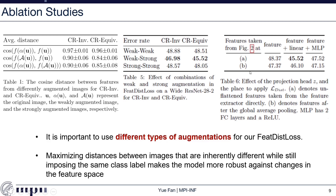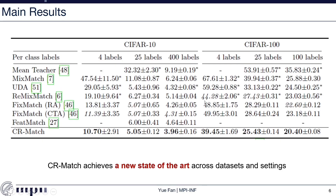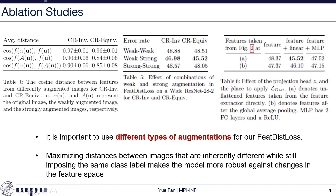In Table 6, we study the effect of the projection head and the place to apply feature distance loss, where AB denotes where we take the features: A means directly from the encoder, and B means after the global average pooling layer. We tested three types of projection heads: no head (feature directly fed into the loss), our default linear layer, and a three-layer MLP. From the table, removing the linear layer or replacing it with a three-layer MLP decreases performance to 48.3% and 47.5% respectively. The same conclusion holds when the feature is taken from the global average pooling layer, justifying our CRMatch design choices.